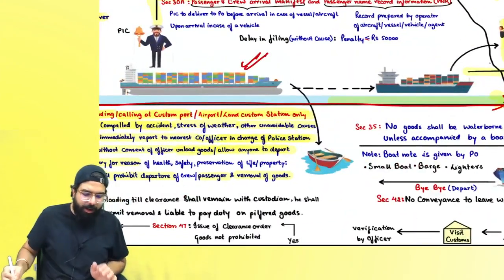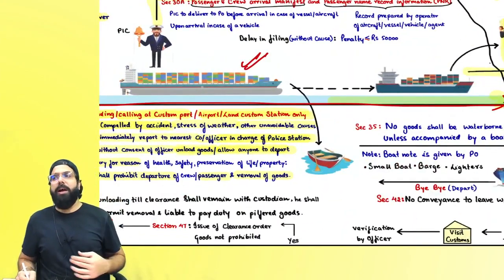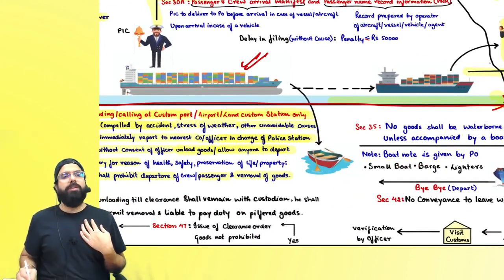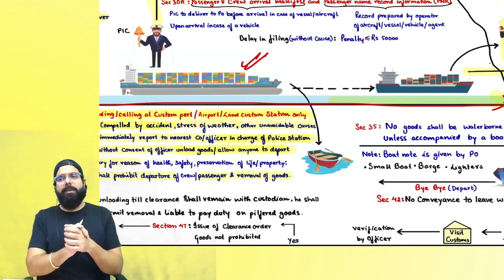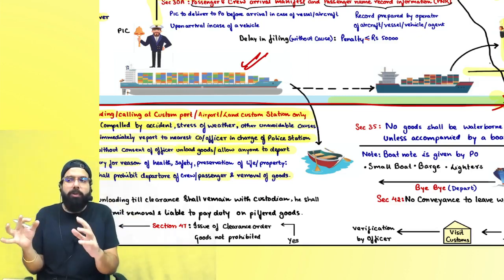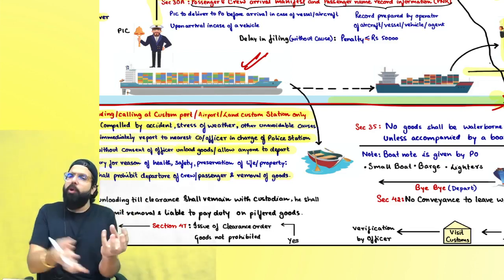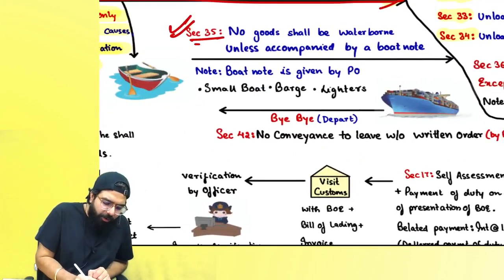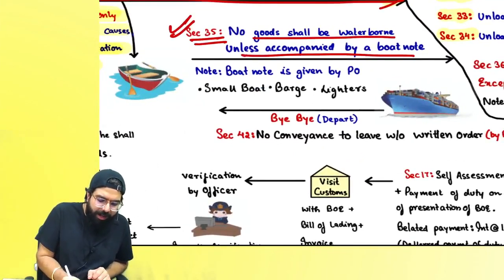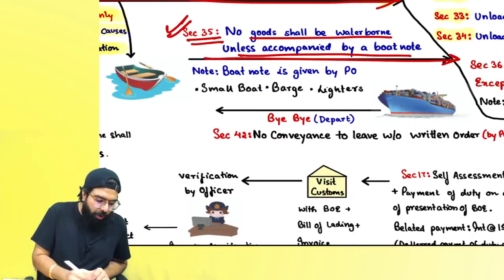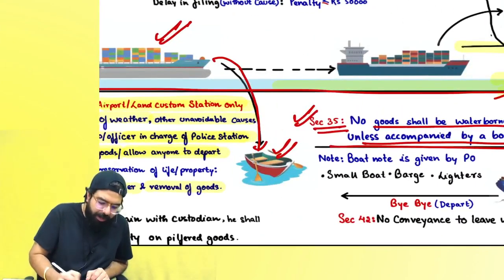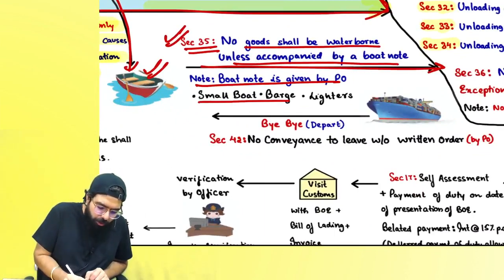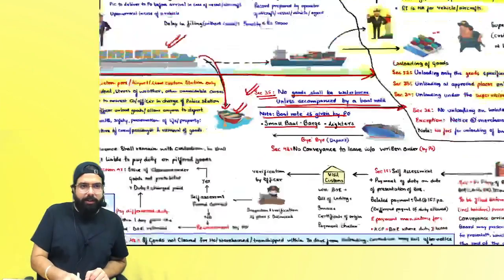Sometimes the mother vessel has come but unloading could not be done because the vessel is too large to come to the port. The mother vessel can stand outside and small boats — also known as bars or lighters — can be used. Section 35 says no goods shall be waterborne unless they are accompanied by a boat note.